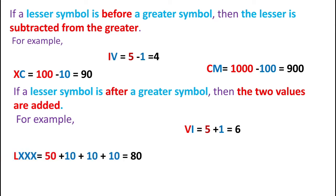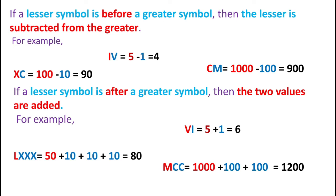Similarly, for LXXX: L stands for 50, and adding 10 plus 10 plus 10 gives us a total value of 80. For MCC: M stands for 1000 and each C stands for 100. Whenever a lesser symbol is after a greater symbol, we apply addition. So 1000 plus 100 plus 100 equals 1200.